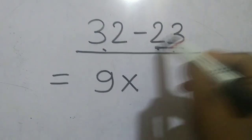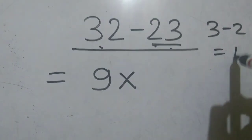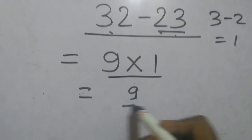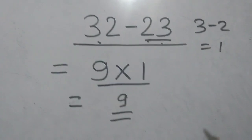the subtraction of the first two digits. 3 minus 2 is 1, here write 1 and 9 times 1 is 9. 9 is the answer.